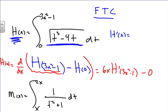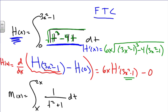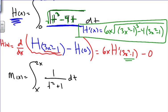We have 6x times h prime. We know h prime equals the value of the function inside, because the derivative of any antiderivative equals the original function. So we substitute 3x squared minus 1 into the integrand: the square root of (3x squared minus 1) cubed minus 4 times (3x squared minus 1), then multiply by 6x. That is the derivative h prime of x.